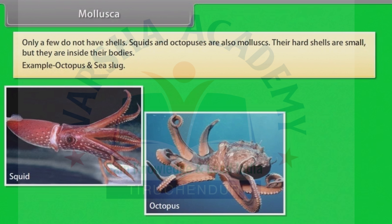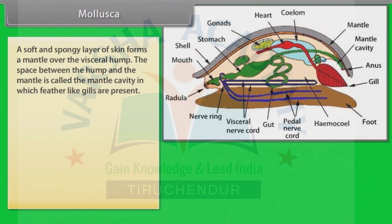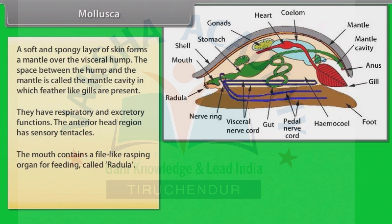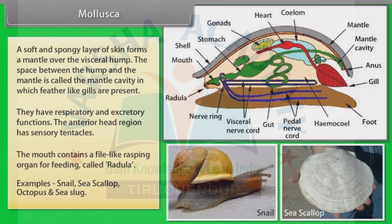Examples of molluscs without prominent shells include Octopus and Sea Slug. A soft and spongy layer of skin forms a mantle over the visceral hump. The space between the hump and the mantle is called the mantle cavity, in which feather-like gills are present with respiratory and excretory functions. The anterior head region has sensory tentacles. The mouth contains a file-like rasping organ for feeding called the Radula. Examples: Snail, Sea Scallop, Octopus and Sea Slug.